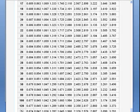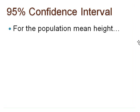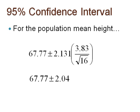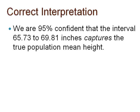Pause now to construct the 95% confidence interval and interpret that interval. Here are the results. We can see that we are 95% confident that the interval 65.73 to 69.81 inches captures the true population mean height. The second part of the interpretation can be seen here.